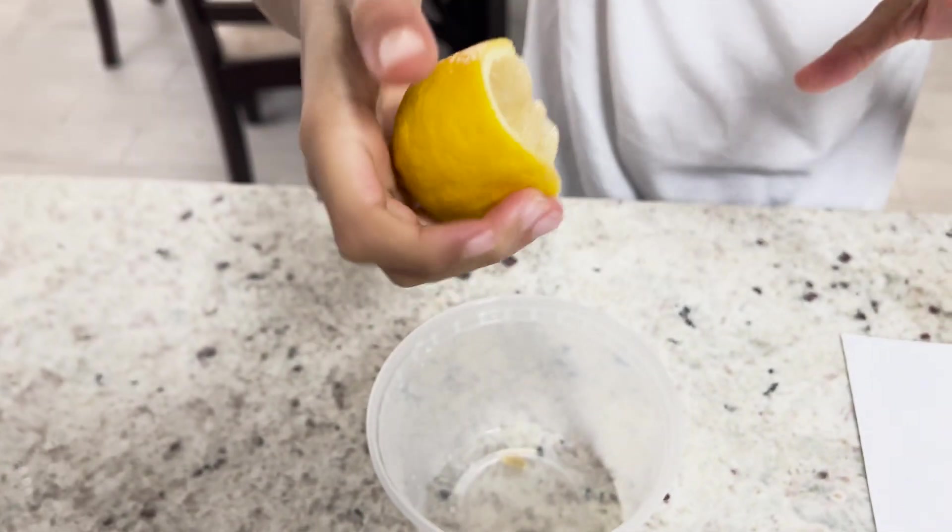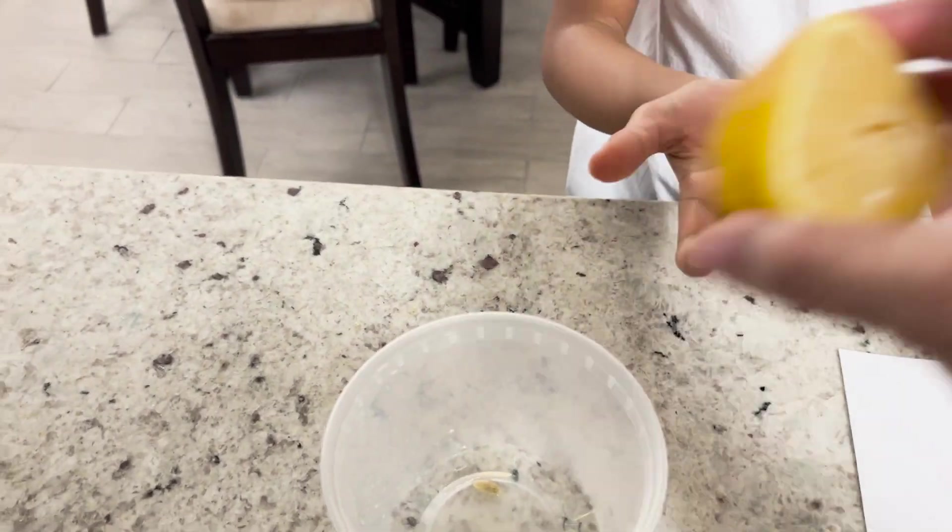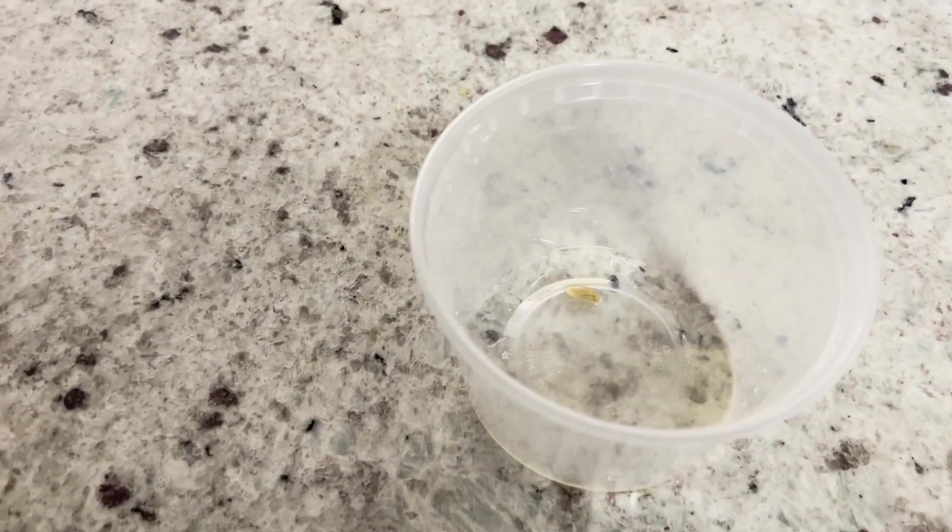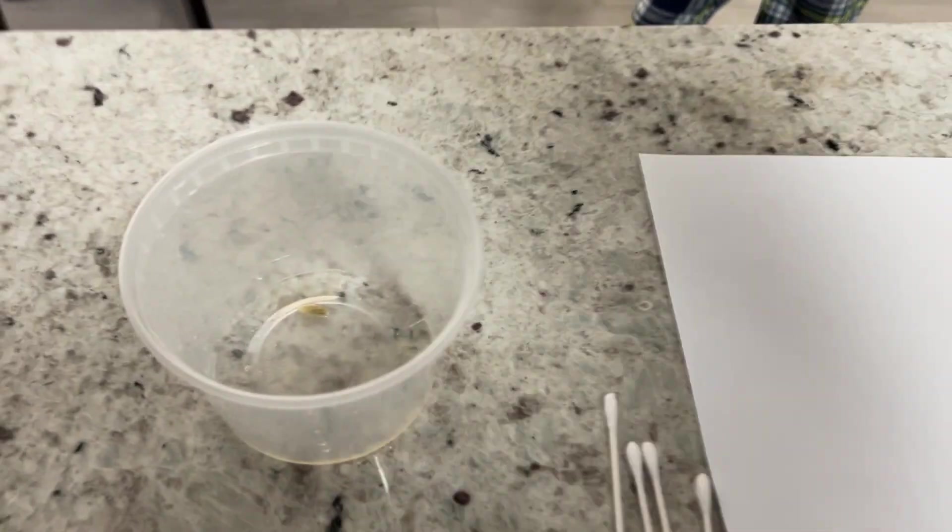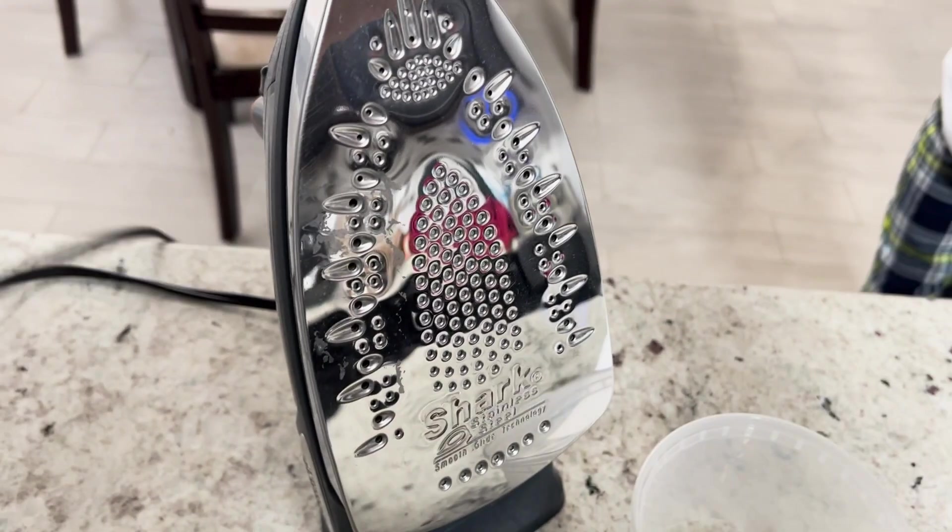So now what I'm going to do is use the juice from the lemon, dip my Q-tip in it, and write my message. So you have to go away. And then when you come back, you're going to reveal it using an iron. Whoa.